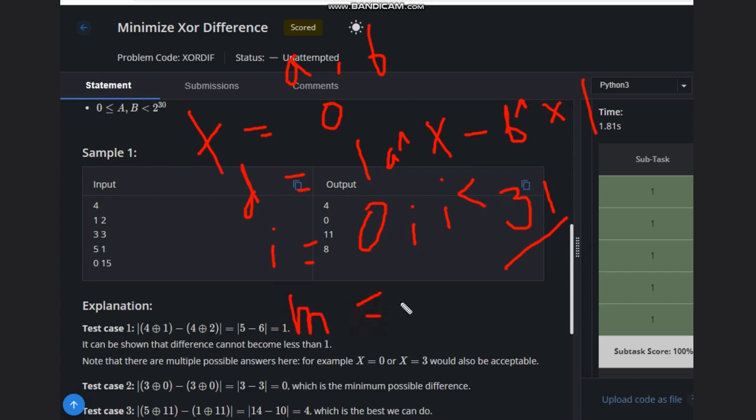The mask will be 1 shifted by i. Now you have to update X. Update X with this mask using OR operation. We are adding this bit - if this particular bit is contributing to minimizing the difference, we will keep that bit. We are taking OR to keep that bit. Then we will calculate a new difference.